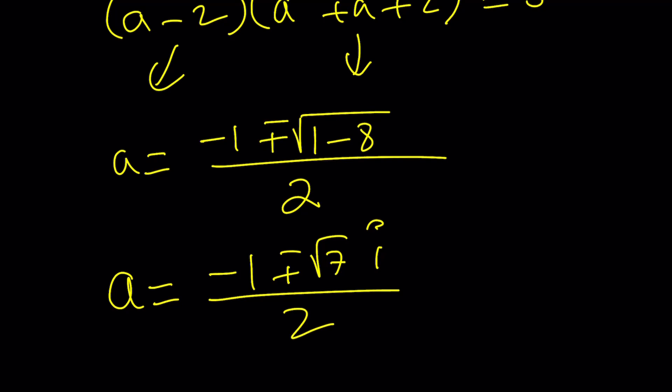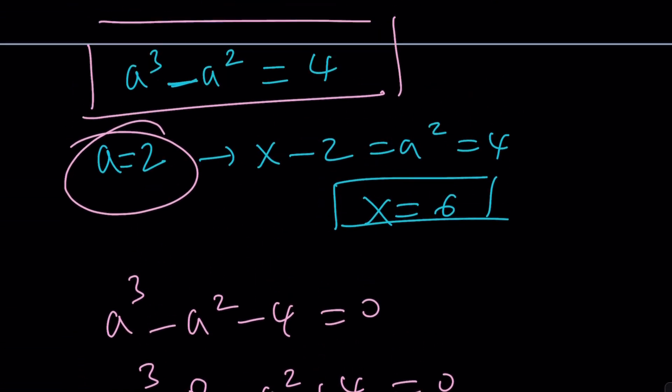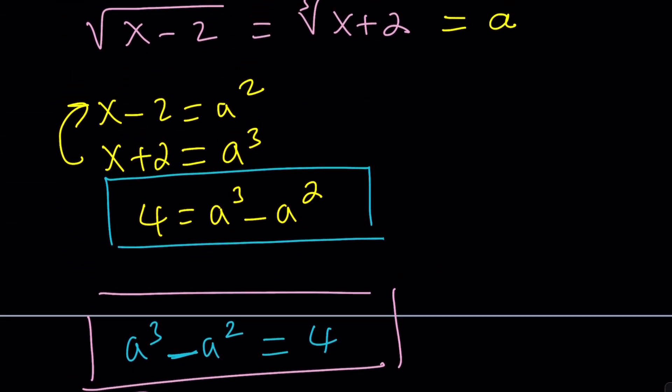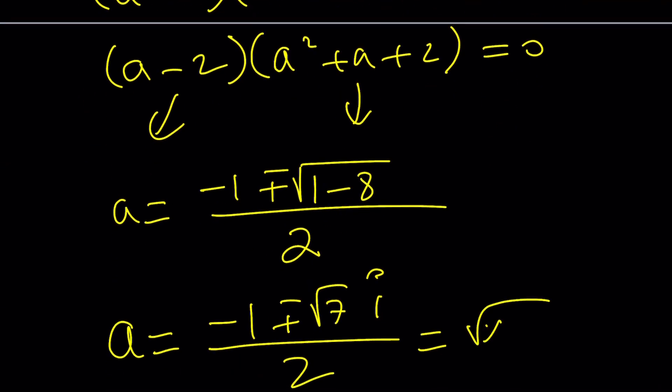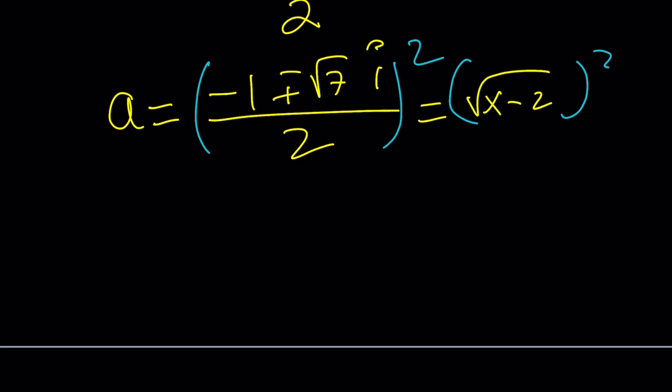But remember, a is equal to something. What is a equal to? a is equal to the square root of x minus 2. So, I'll set it equal to square root of x minus 2. And then square both sides. And you should get the other solutions. Of course, after this, you have to add two to both sides, so on and so forth. But that part is left as an exercise for you.